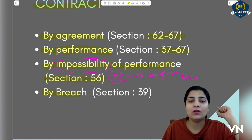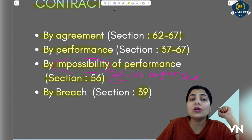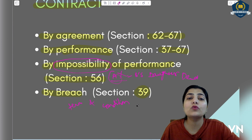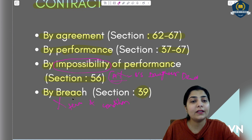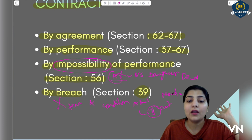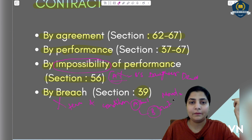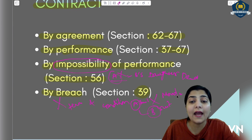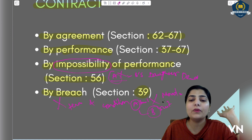The last way is by breach, given in section 39. Breach means when you do not follow a necessary term or condition of the contract. For example, A is a tailor and B has given him a suit to stitch, saying 'I need this suit by Monday because there's a function at my house on Wednesday.' But A does not stitch the suit by Monday — he has breached the contract. So B is free from the contract, and can directly claim damages against A.